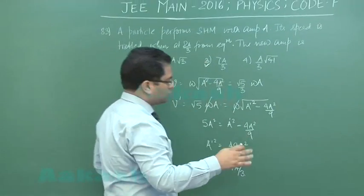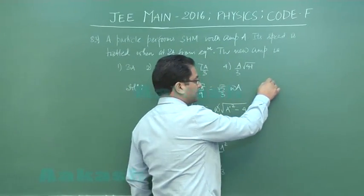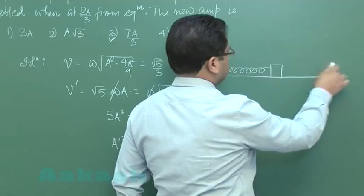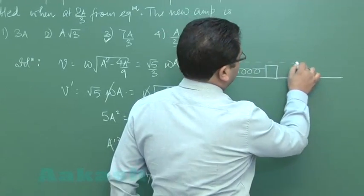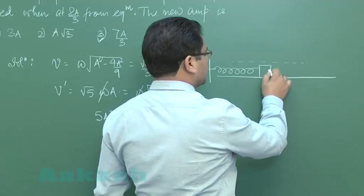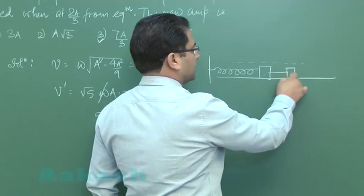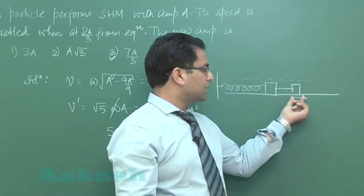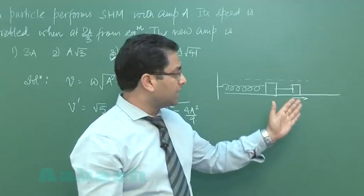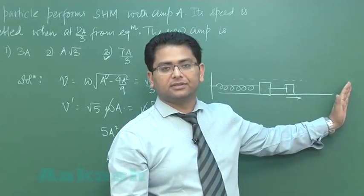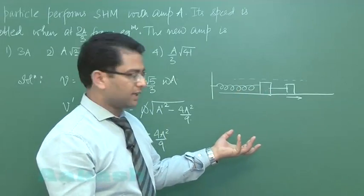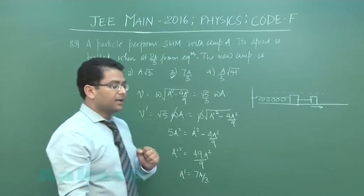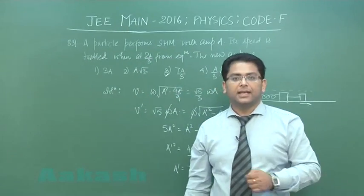That gives us option number 3. To give you more extensive idea, if I take an example of spring pendulum, it was oscillating within this range but when it reached 2A by 3 a sharp impulse was given. So suddenly at this position it acquires a new velocity, so clearly it would be going to a larger value of amplitude. That's the physical interpretation. We got option number 3 as the correct answer for question number 83.